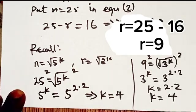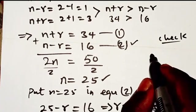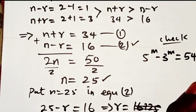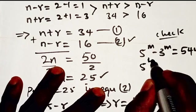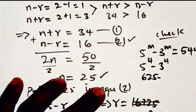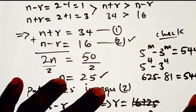Let's check our answer. We have 5^k minus 3^k equals 544. Putting k equals 4, we get 5^4 minus 3^4. Now 5^4 equals 625 and 3^4 equals 81. Taking 81 from 625 gives us 544. This confirms we are correct.